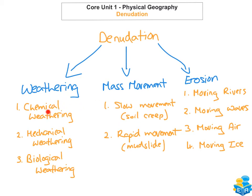For weathering examples: for chemical weathering, an example can be seen in County Clare in the Burren. For mechanical weathering, you could see this in Yosemite in the USA. For biological weathering, you could see that in most counties when the roots come up through the road — so you could say County Meath, when the roots actually come up through the road.